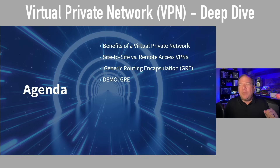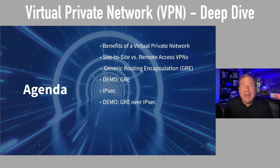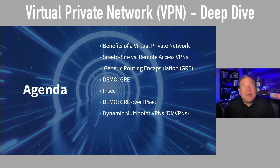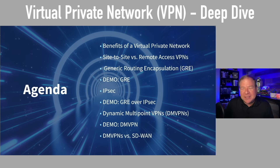We'll identify an issue with GRE and solve it with IPsec, then demo IPsec. After that, we'll note that it doesn't scale very well, and address that by going another layer deeper — peeling back the layers of the onion — into DMVPNs, dynamic multipoint VPNs, which we'll also demonstrate. Finally, we'll ask: how can we be even more flexible and scalable than a DMVPN? The answer is SD-WANs, software-defined wide area networks.